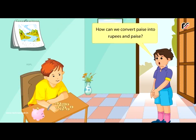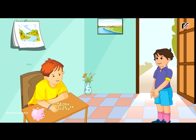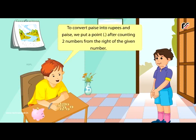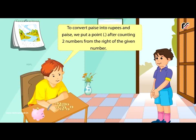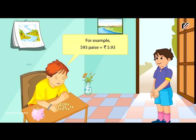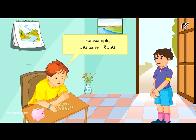To convert paise into rupees and paise, we put a point after counting two numbers from the right of the given number. For example, 593 paise is equal to ₹5.93.